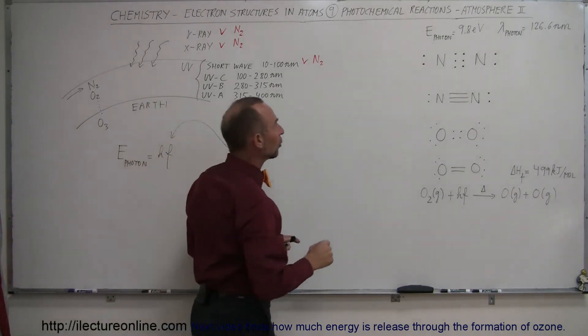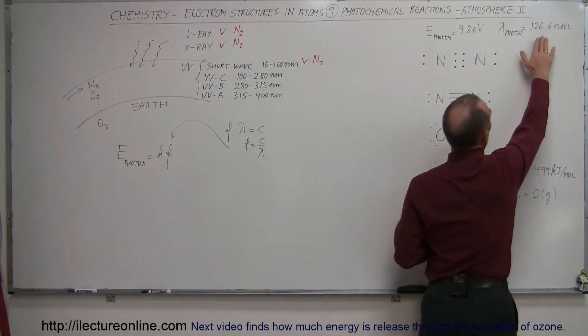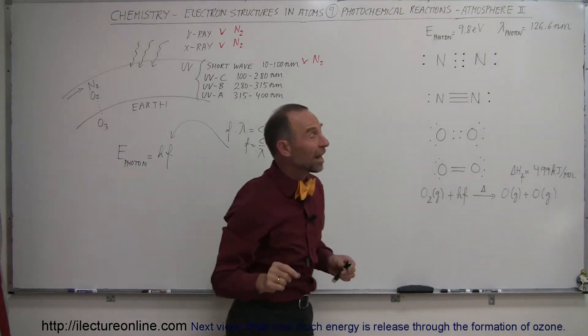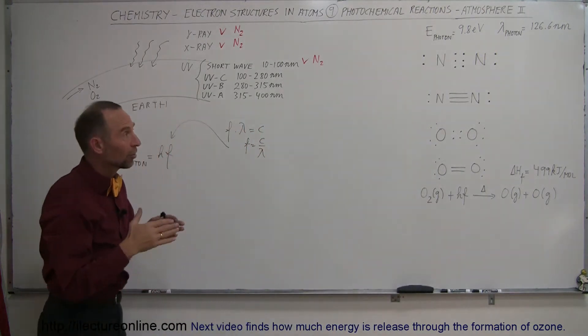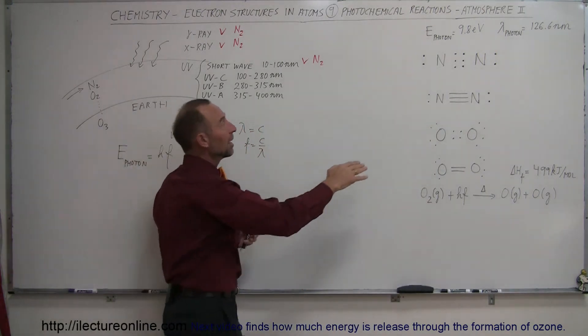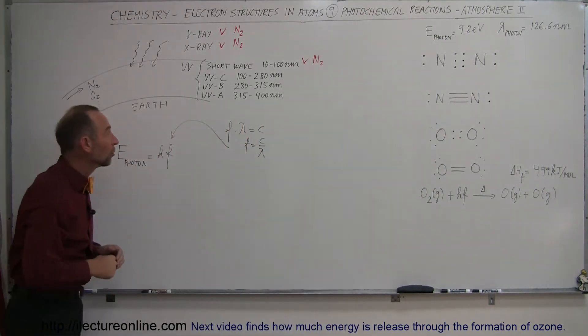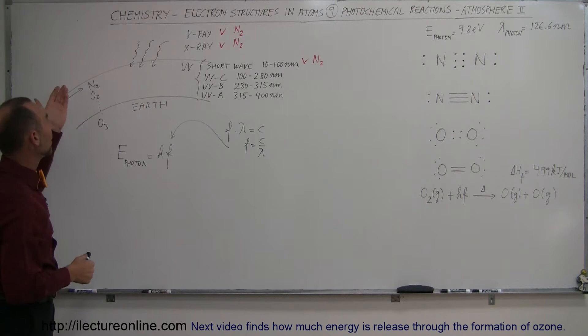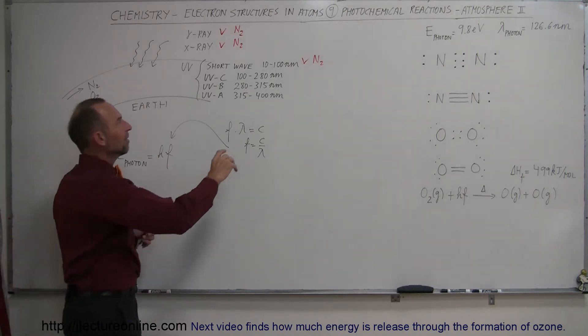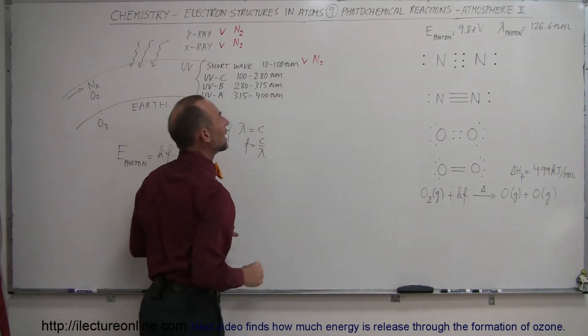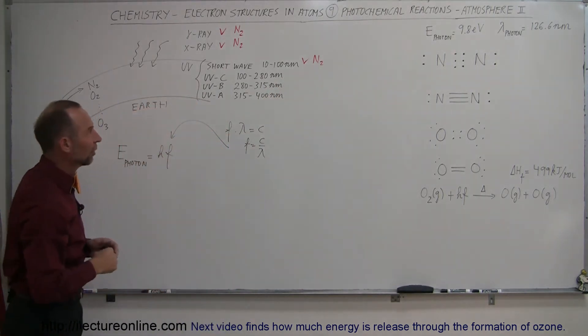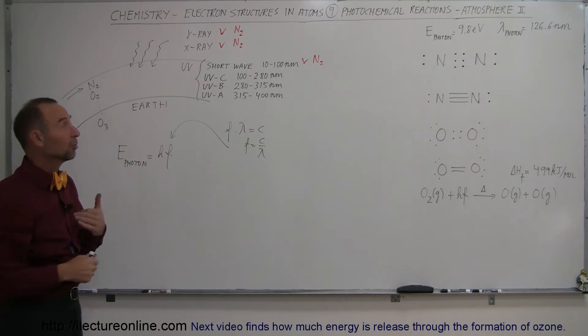Notice that any molecule with wavelengths shorter than 126.6 nanometers will get absorbed because the energy will be used to dissociate the nitrogen molecules in the atmosphere, which of course are the most abundant molecules. It's about 78% of all the atmosphere is nitrogen gas. But there's still these three types of UV radiation that seem to make it through our atmosphere. So how are we protected from those?